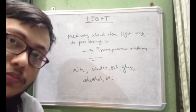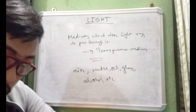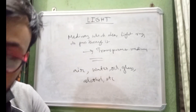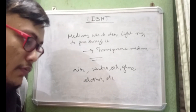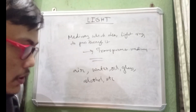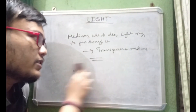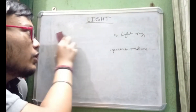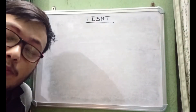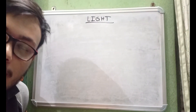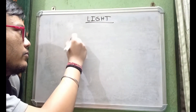Now the question is why does refraction of light take place — why does light bend? The cause of refraction is because of the speed of light. The speed of light in vacuum is 3 × 10⁸ meters per second, which is constant.